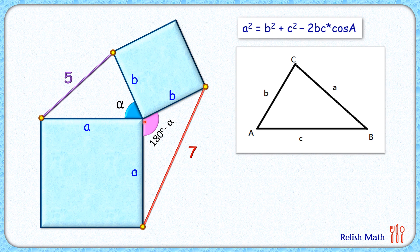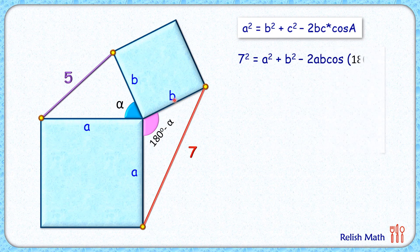in this triangle here with side lengths a, b, and 7, we'll get 7² = a² + b² - 2ab cos(180° - α). Now we know that cos(180° - α) is nothing but -cos α, so this minus and minus will become plus here.